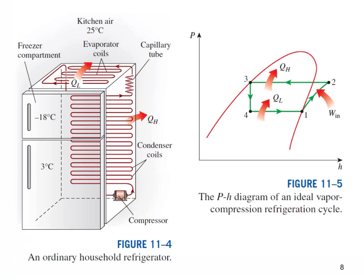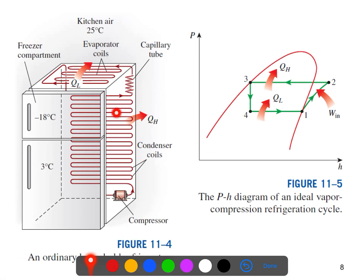In this part of the video on the ideal vapor compression refrigeration cycle, you will see the schematic of the ordinary household refrigerator. The tubes in the freezer compartment are where the heat is absorbed by the refrigerant, so the freezer compartment serves as an evaporator. You can see the evaporator coil here, labeled QL.